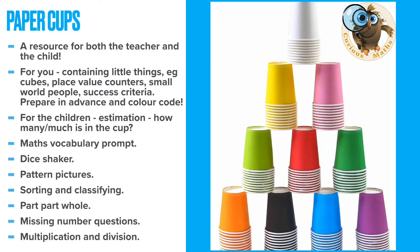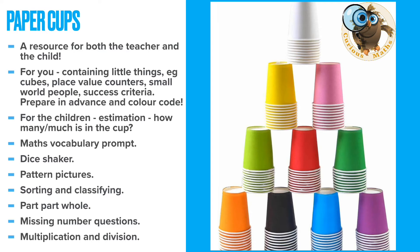Number twelve: paper cups. I consider this a resource for both you and the children. They're very sturdy — much better than plastic, more environmentally friendly, and very colourful. I use them to store small manipulatives like place value counters, small world people, or coins, and colour-code them to think about which groups need which resources. I particularly like using cups for multiplication and division — the stacks work really well — and for missing number questions where you can hide what you don't want children to see.